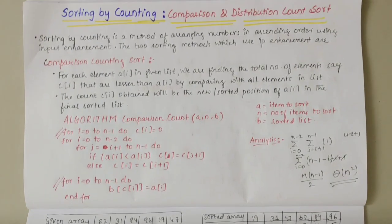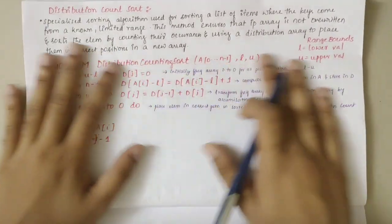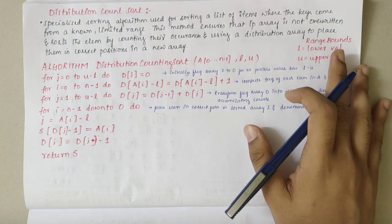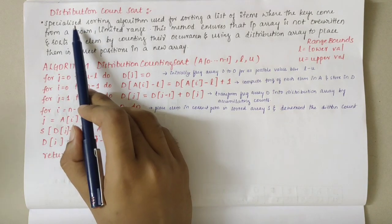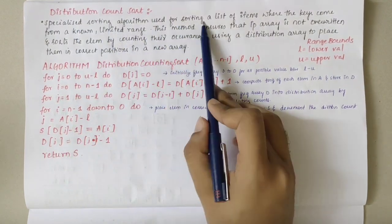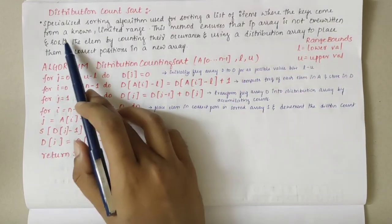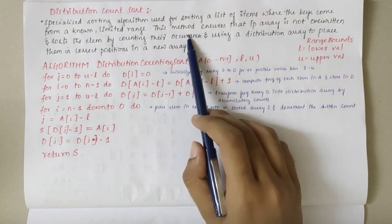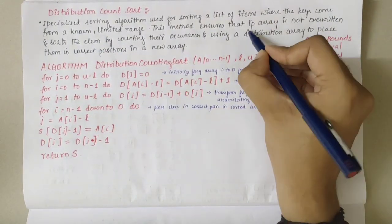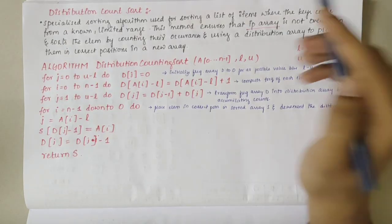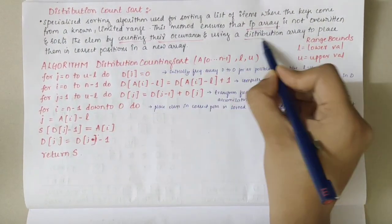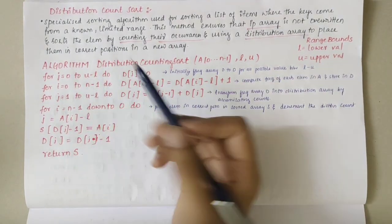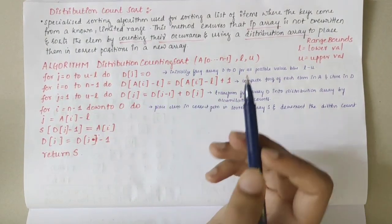Now let's move to distribution count sort. Distribution count sort is a specialized sorting algorithm used for sorting a list of items where the key comes from a known limited range. This method ensures the input array is not overwritten, and sorts elements by counting their occurrences and using a distribution array to place them in correct positions in a new array.